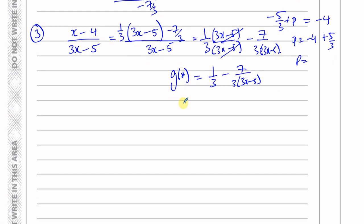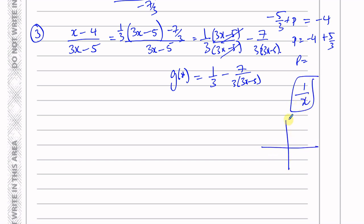Whichever method you use, done correctly, you arrive at the same form. The reason I rewrote it in this form is that it's a transformation of 1 over x, which I know how to draw. I know how to draw 1 over x — it's the reciprocal function — so all of this is some sort of transformation of that function.